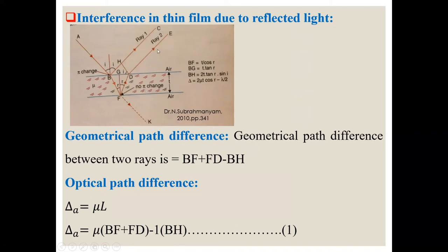The geometrical path difference between these two rays is BF plus FD minus BH. Optical path difference between these two rays, delta is equal to mu L. So delta is equal to mu into BF plus FD minus BH, equation one.